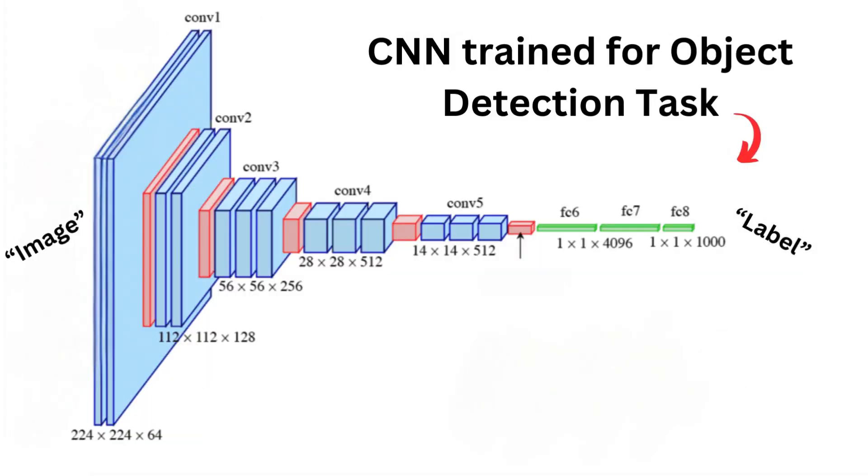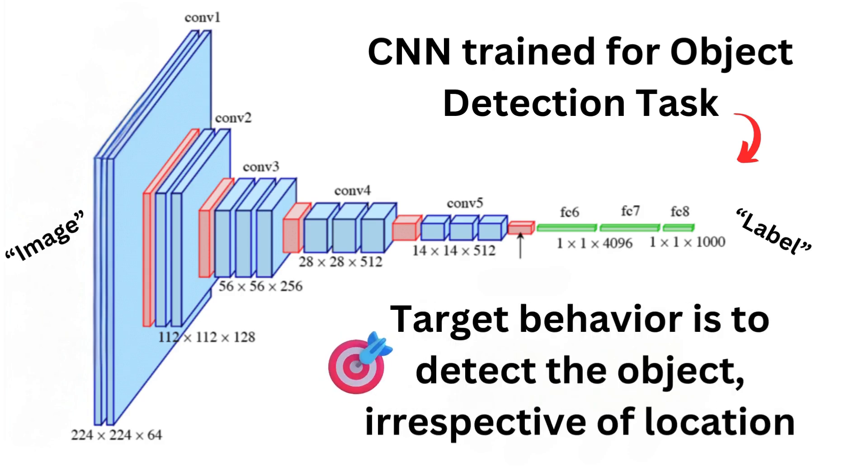In object detection, this translational invariance property is pretty important as the task is to take an image as input and return a label. Invariance to translation means that if we translate the input by a small amount, the value of most of the pooled output does not change, and this definition comes from the Deep Learning book. The target behavior for a network is to detect the object irrespective of the location in the image, so having the same behavior internally in the network irrespective of small translations is pretty important.